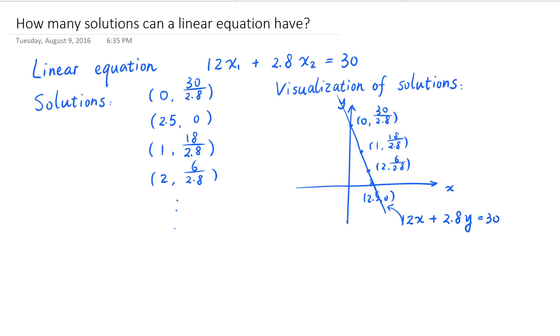So this linear equation about two unknown variables has infinitely many solutions, because for any value that x sub 1 takes, there is a corresponding value of x sub 2 so that the 2-tuple (x sub 1, x sub 2) can satisfy this equation.